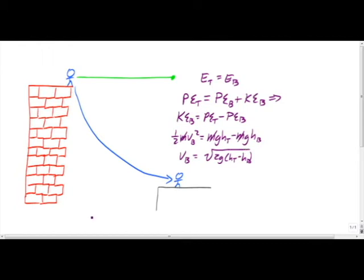Plugging in what we know, g is still 9.81 meters per second squared. The height at the top of the wall is 25 meters, and if we assume that the height at the bottom of the wall is about 5 meters, since it looks like that's about a story and a half, we find a final velocity at the bottom of about 19.8 meters per second. That's about 44 miles per hour.